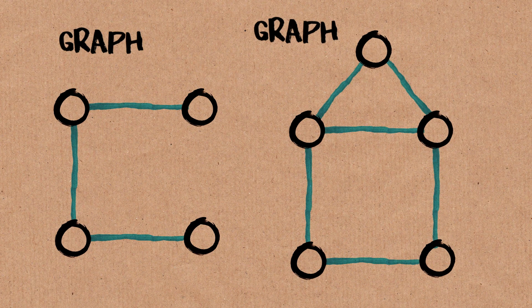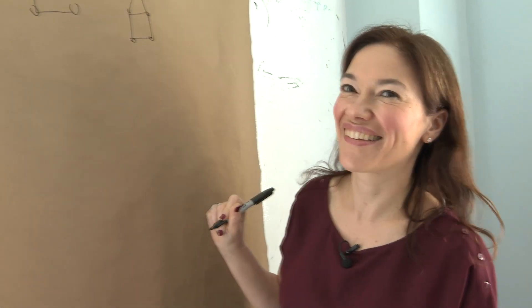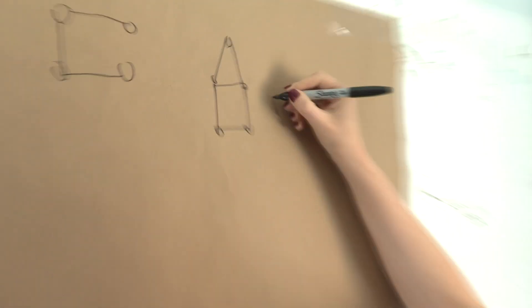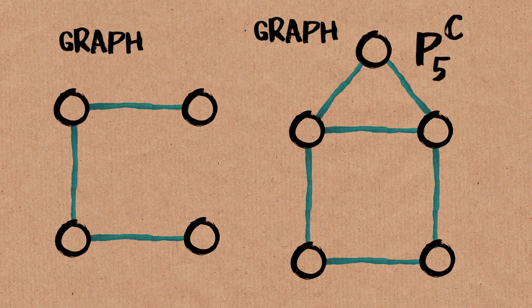This is also a graph, called a house. You actually call that a house? We actually call that a house, yes. Its official name is P5 complement. Its nickname is the house.